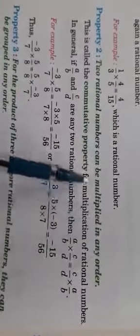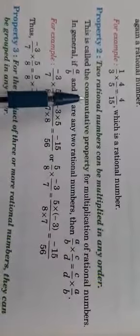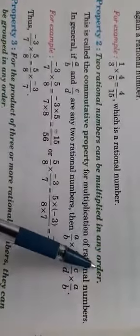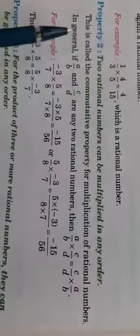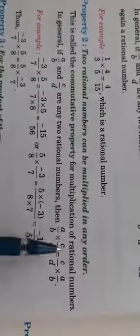Property two: two rational numbers can be multiplied in any order. If two rational numbers are multiplied in any order, this property is called the commutative property. Please write and make notes in your copy. In general, if a upon b and c upon d are two rational numbers, then a upon b into c upon d equals c upon d into a upon b.